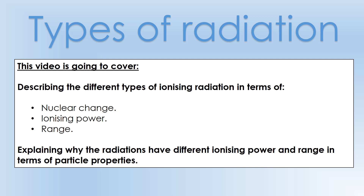In this video we're going to look at the different types of radiation. We'll describe ionizing radiation in terms of the nuclear change that occurs during each type, talk about the ionizing power of each type, their range in air as an example, and explain the differences between them in terms of particle properties.